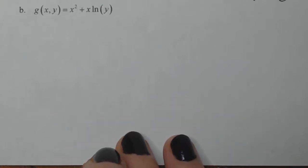All right, we're going to find the four partial derivatives of this guy: x squared plus x natural log of y.